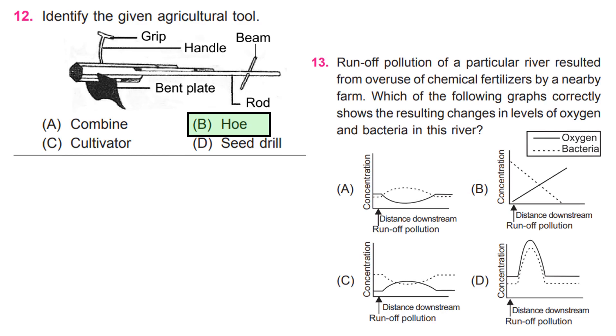Runoff pollution of a particular river resulted from overuse of chemical fertilizers by a nearby farm. Which of the following graphs correctly shows the resulting changes in levels of oxygen and bacteria in this river? A.